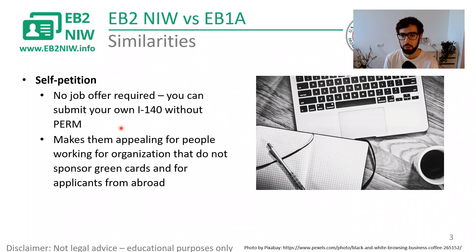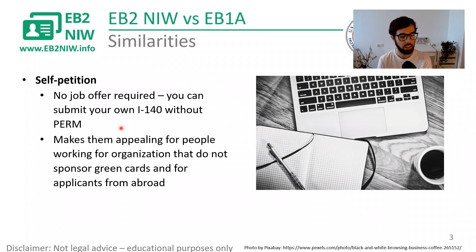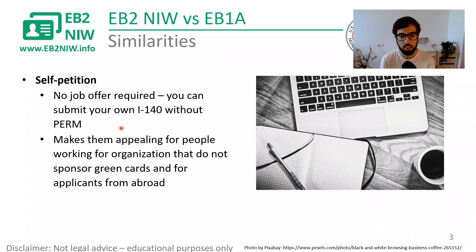Another similarity between EB1A and EB2NIW is that you can self-petition, meaning you don't need a job offer to apply for this green card. You can submit your I-140 without a labor certification. This makes these processes really appealing for people whose organizations don't want to sponsor them, or for people abroad who want to immigrate to the United States without a job offer but are highly qualified.